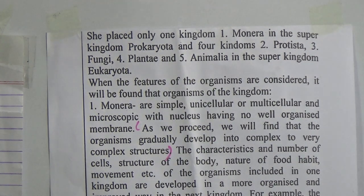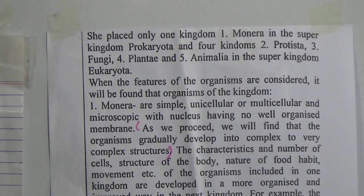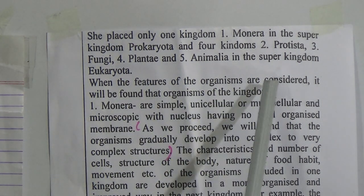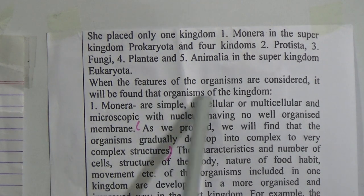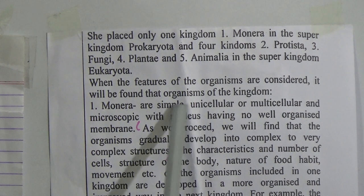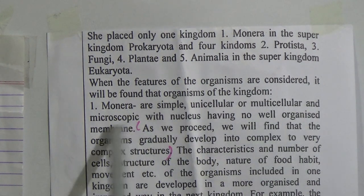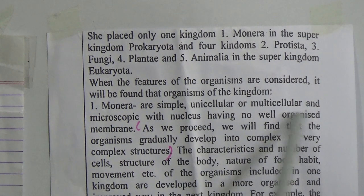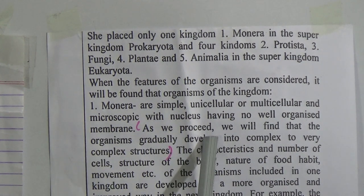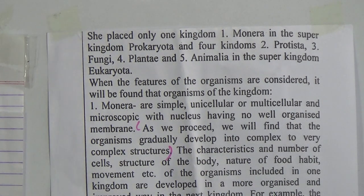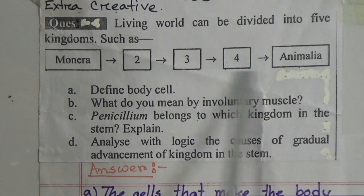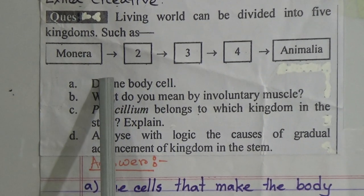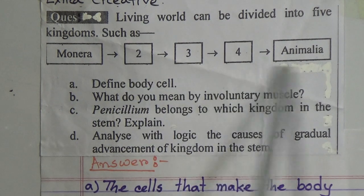When the features of organisms are considered, it will be found that organisms of kingdom Monera are simple, unicellular or multicellular, and microscopic, with a nucleus having no well-organized membrane. As we proceed through the kingdoms, organisms gradually develop into more and more complex structures. In Monera the cells are not well organized, but as we go through Monera, Protista, Plantae, Fungi, and Animalia, their cells are gradually developed.